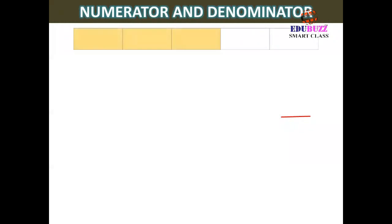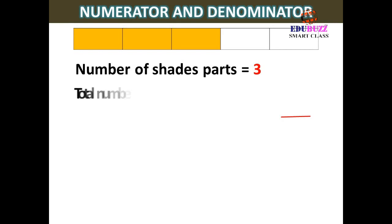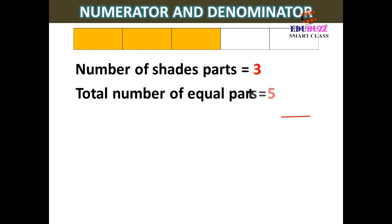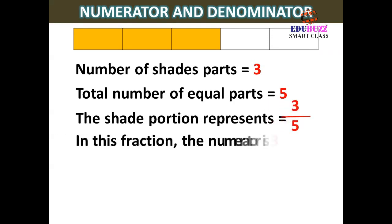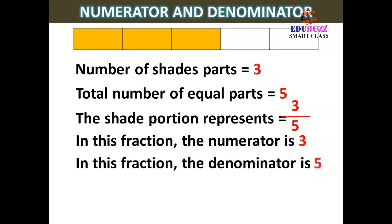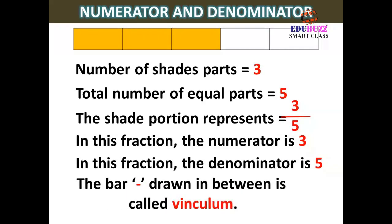Numerator and denominator. Number of shaded parts is equal to 3. Total number of equal parts is equal to 5. The shaded portion represents 3 upon 5. In this fraction, the numerator is 3, and the denominator is 5. The bar drawn between them is called vinculum.